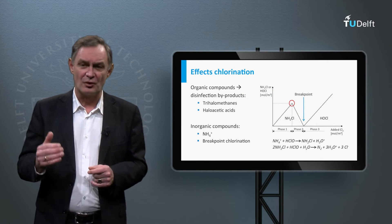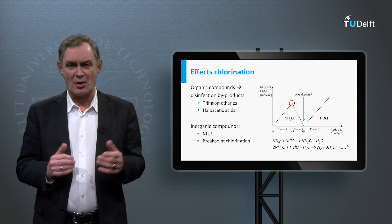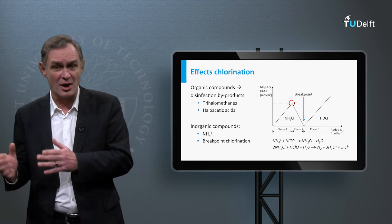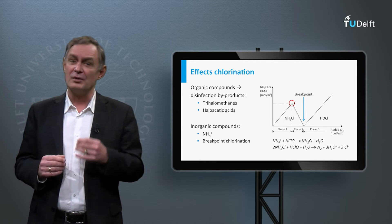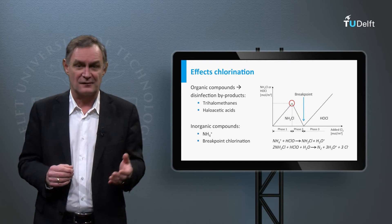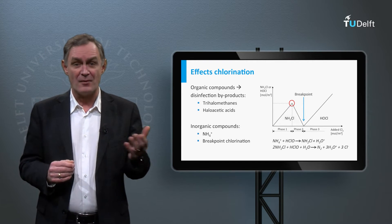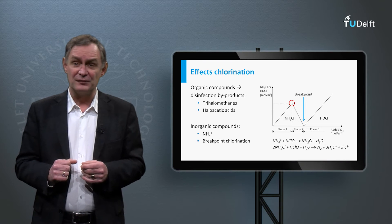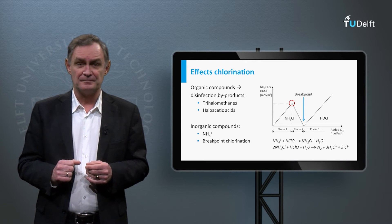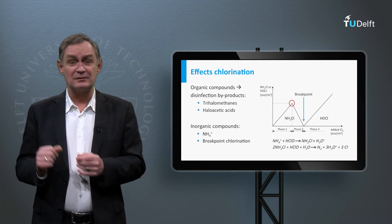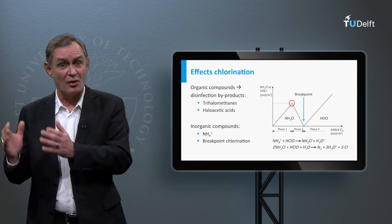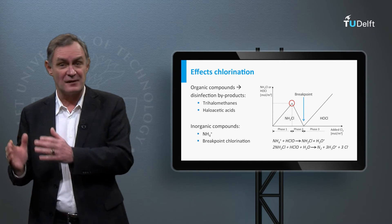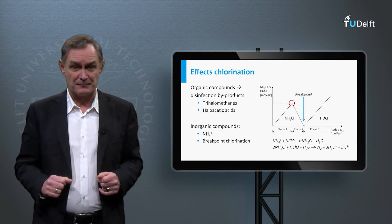The concentrations of chlorine used for ammonium removal are quite large. Therefore, nowadays we use other methods to remove ammonium, for example biological filtration, or we avoid the discharge of ammonium in water bodies by extensive sewage treatment.